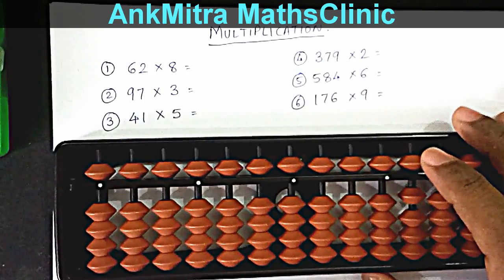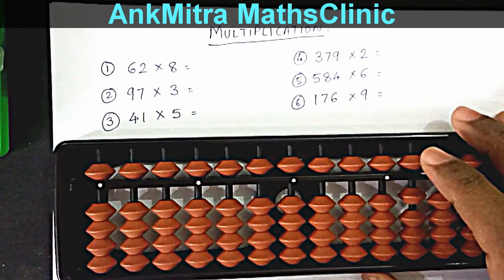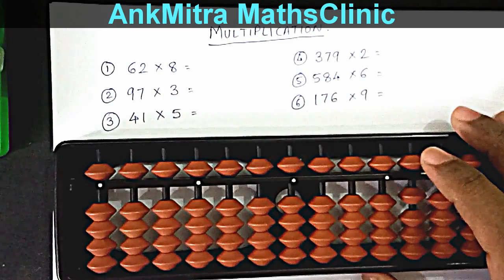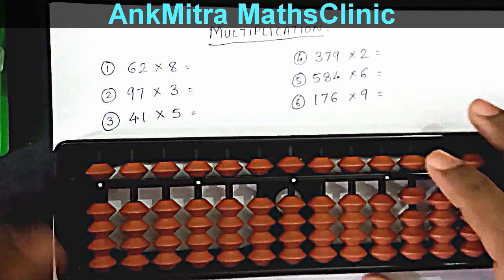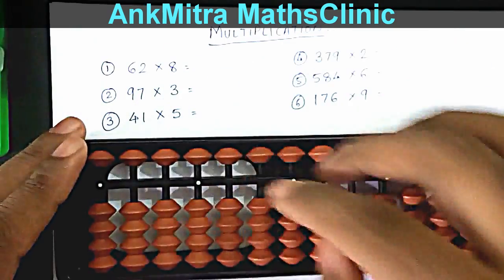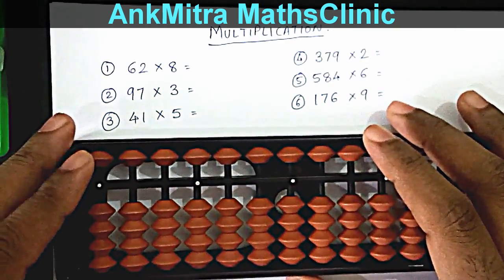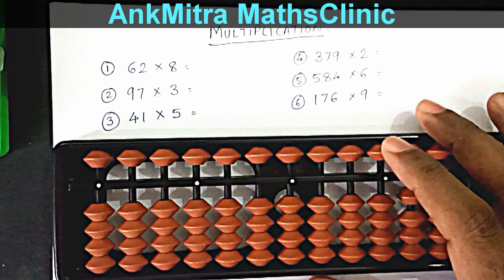Hello everyone. There were requests from certain subscribers to present more examples of multiplication. I have written six new examples: the three on the left are two-digit multiplied by one-digit, and three on the right are three-digit multiplied by one-digit.